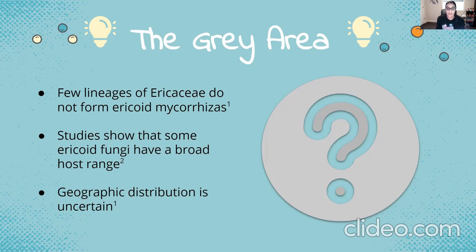Furthermore, the geographic distribution of many fungi is uncertain, primarily because the identification of fungal partners has not always been easy, especially prior to the application of DNA-based identification methods. Lastly, there is limited research on how ericoid mycorrhizals function compared to arbuscular and ectomycorrhizal associations, and important details of the ericoid mycorrhizal relationship and their distribution might change five to ten years from now.